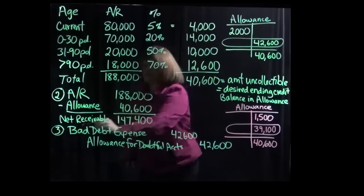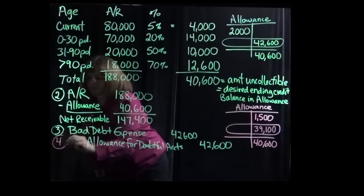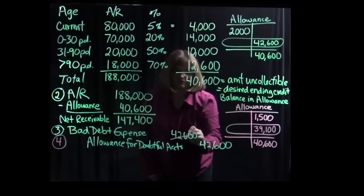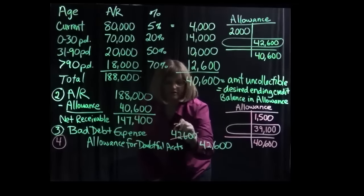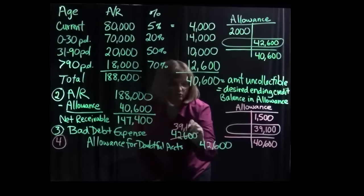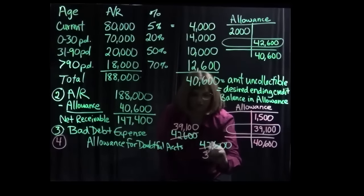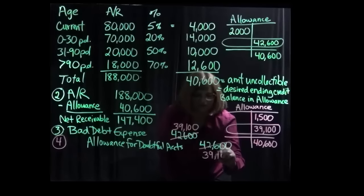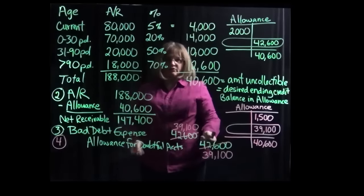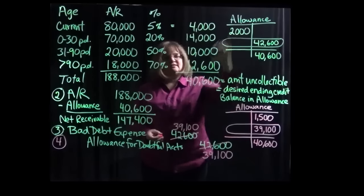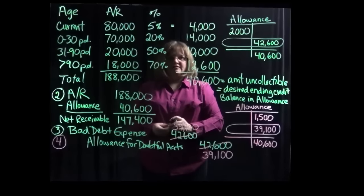So we would make the same entry, I won't repeat writing the accounts out, but instead of debiting bad debt expense for $42,600 we would debit it for $39,100 and we would credit the allowance balance account for $39,100. So that's the only thing that would change if our starting balance was $1,500 credit instead of $2,000 debit.